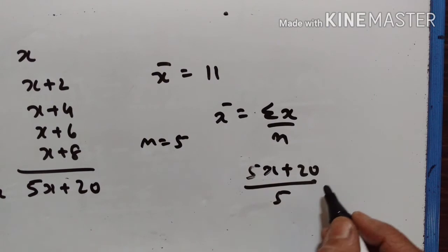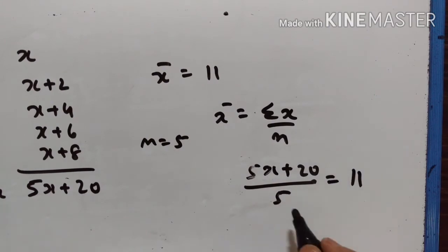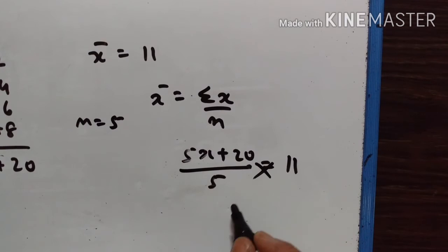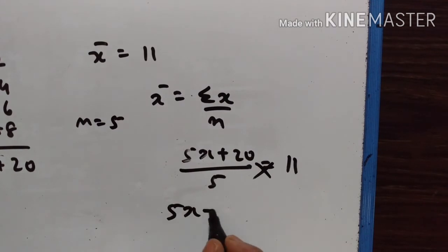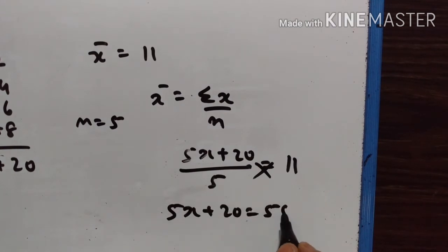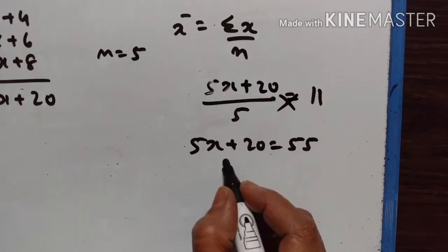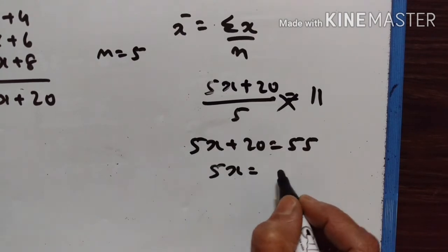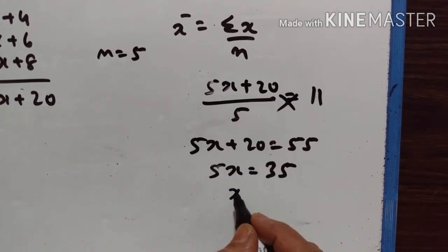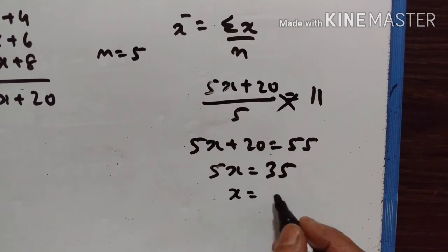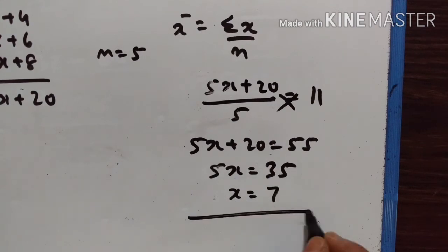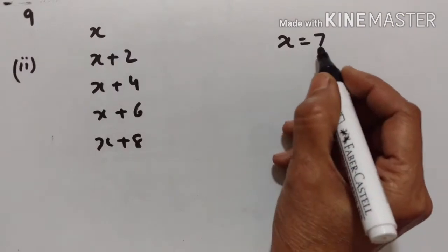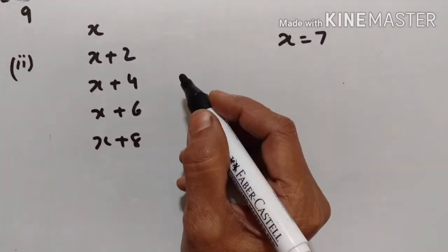This is equal to 11, the mean. Cross multiplying: 5x plus 20 is equal to 55. So 5x is equal to 55 minus 20, which is 35. Therefore x is equal to 35 divided by 5, that is 7.